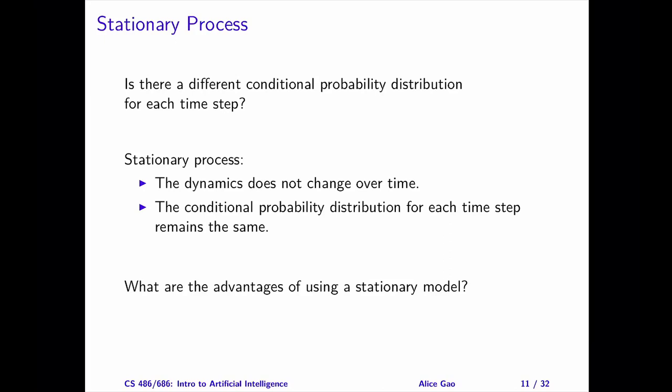Given the Markov assumption, how many conditional probability tables do we need to specify the transition model? In general, the transition probabilities at each time step may be different. We potentially need a separate table for each time step.